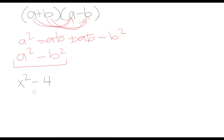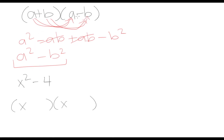We can recognize immediately that we have a difference of two squares, and we can factor this by taking the square root of each term. The square root of x squared is x, and from our formula we know that when we have a difference of two squares we factor it by taking the square root of each term — in one bracket adding them and in the other subtracting them. So we get x minus 2 times x plus 2, since the square root of 4 is 2.